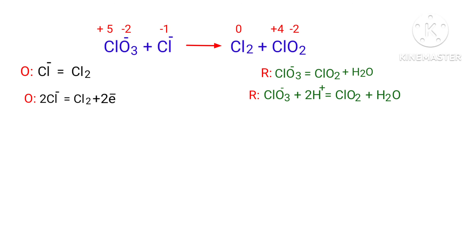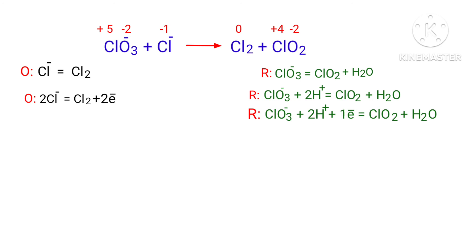Now the addition of charges are not equal in the reduction half reaction. To make them equal, you should add one electron to the left side to make it equal to 0. Now the addition of charges are equaled in the reduction half reaction.